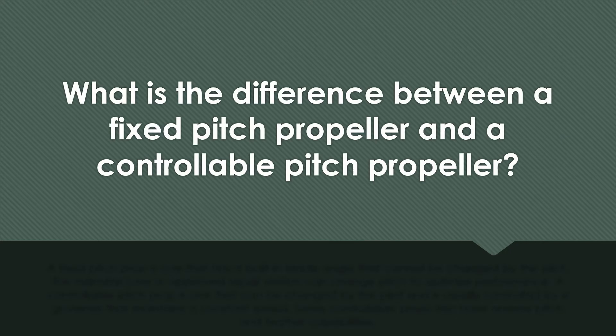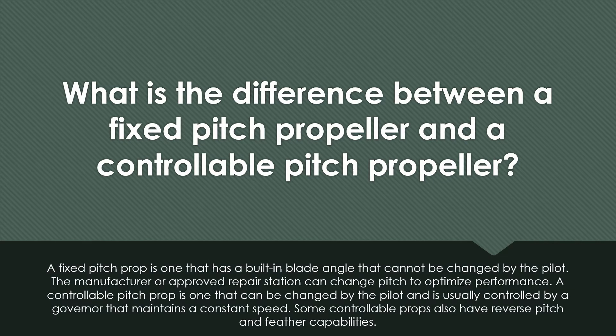What is the difference between a fixed pitch propeller and a controllable pitch propeller? A fixed pitch prop is one that has a built-in blade angle that cannot be changed by the pilot. The manufacturer or approved repair station can change the pitch to optimize performance. A controllable pitch prop is one that can be changed by the pilot and is usually controlled by a governor that maintains a constant speed. Some controllable props also have reverse pitch and feather capabilities.